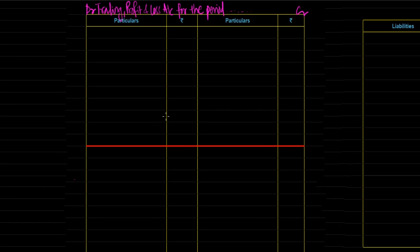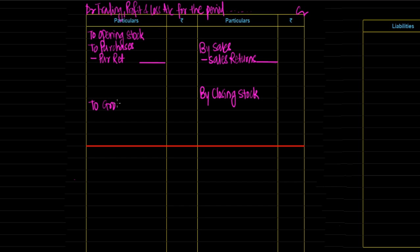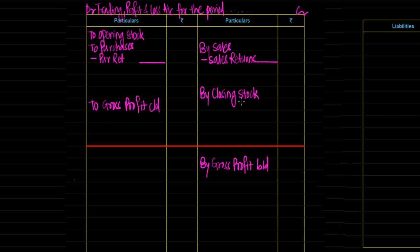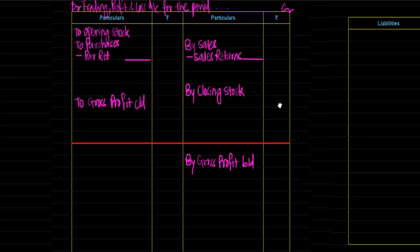There are some major transactions which always come, so before solving any question we write those things first. On the debit side we write: opening stock, purchases minus purchase returns. On the credit side: sales less sales returns, and closing stock. Gross Profit will be calculated here and carried down to the Profit and Loss statement — by gross profit brought down on the credit side. Trading Account can be termed as a Goods Account because we debit whatever comes into the business — opening stock, purchases — and we credit what is going out — sales. Closing stock is the stock lying as on the last day, which carries over to the next accounting year and becomes opening stock on the debit side.